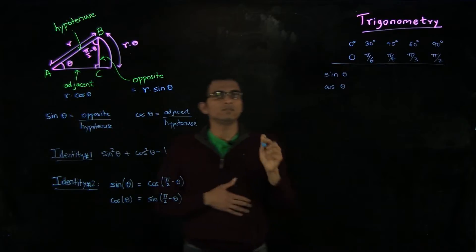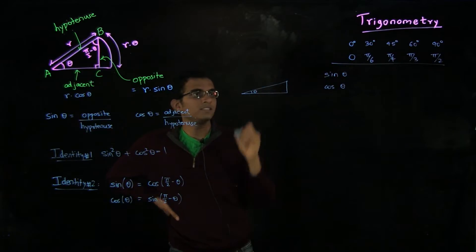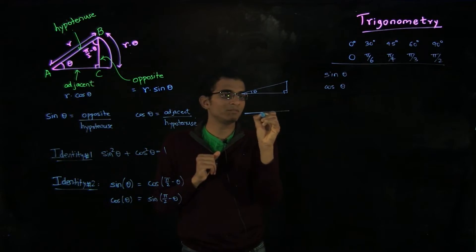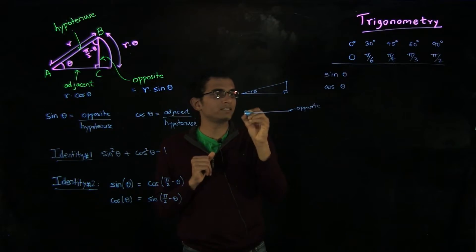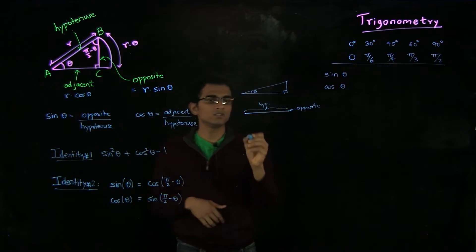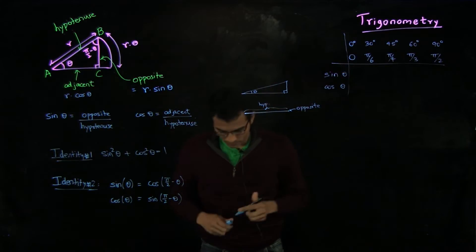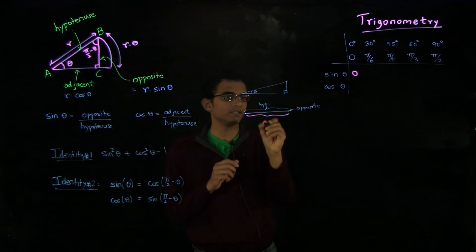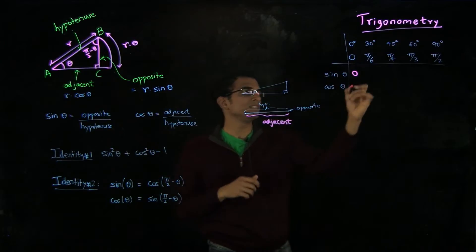Let us start with 0 degrees. For 0 degrees, remember that I want a triangle where this angle is theta and this angle is the right angle, but I want theta to be 0. So the triangle is essentially degenerate — the opposite side is 0 and the hypotenuse coincides with the adjacent. So sin of 0 is opposite upon hypotenuse, which is 0. And cos of 0 is adjacent upon hypotenuse; since they are the same length, cos of 0 is 1.